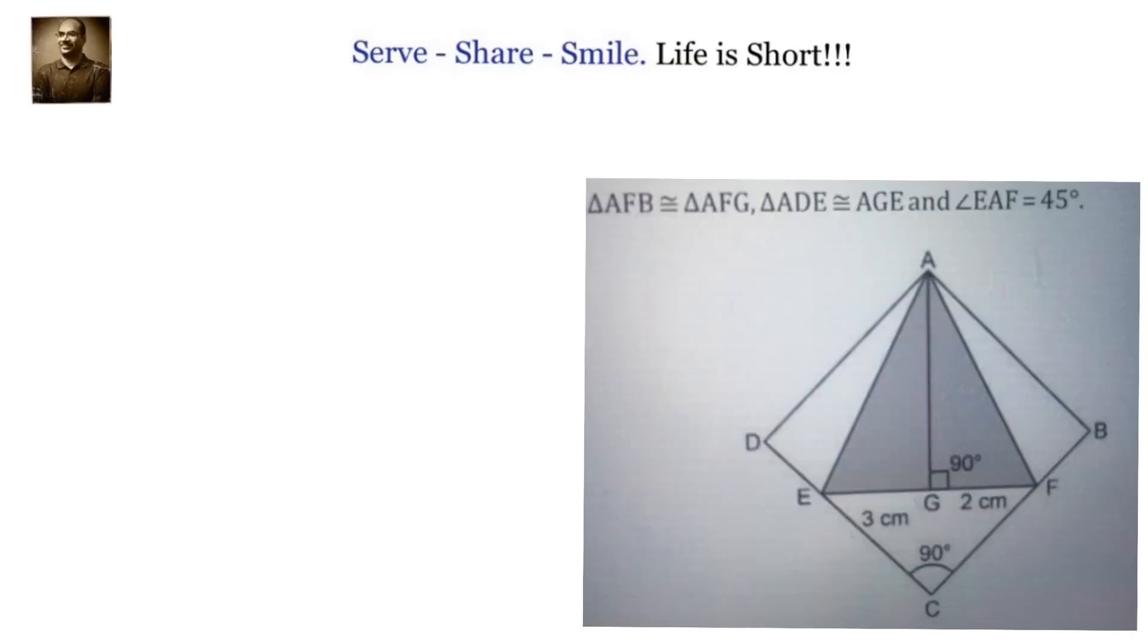Hello friends, welcome back, hearty welcome to you. Let us look at this problem related to 9th grade triangles and quadrilaterals. We have been given that triangle AFB is congruent to triangle AFG and triangle ADE is congruent to triangle AGE and angle EAF equals to 45 degrees.